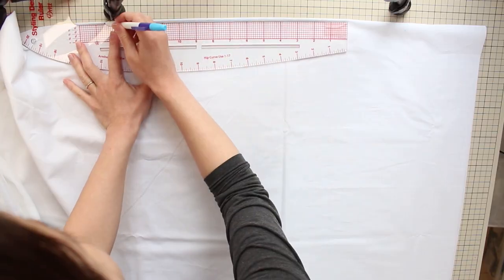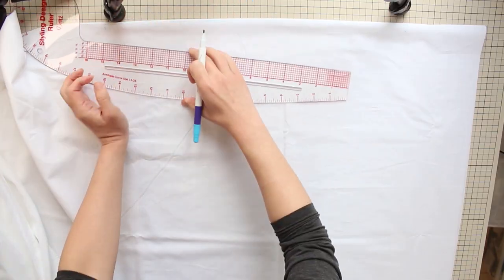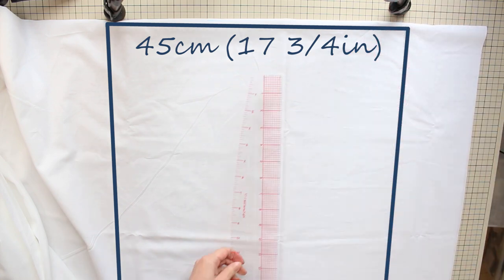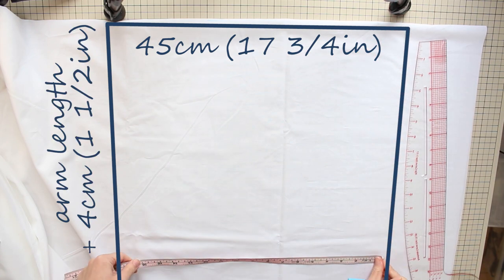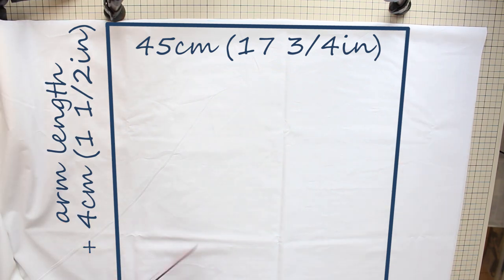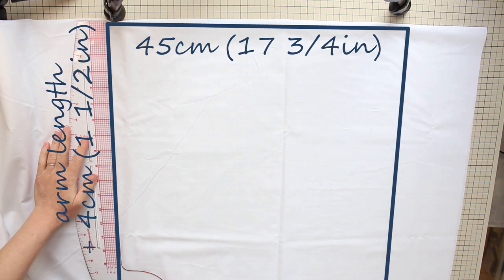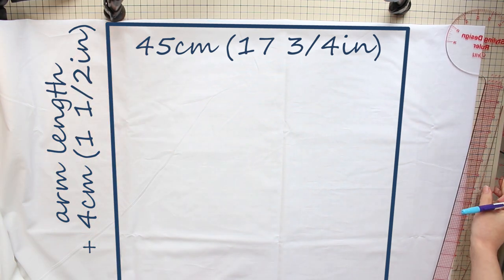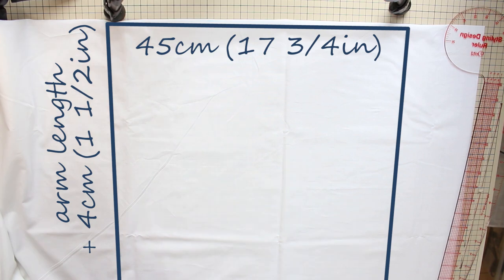Next, fold your fabric in half and first draw a rectangle that's 45 centimeters or 17 and 3 quarter inches wide. And the length is your arm length plus 4 centimeters or 1 and a half inches. Use a fabric marker with disappearing ink here. If the circumference of your upper arm measures more than 38 centimeters or 15 inches, make this panel wider.